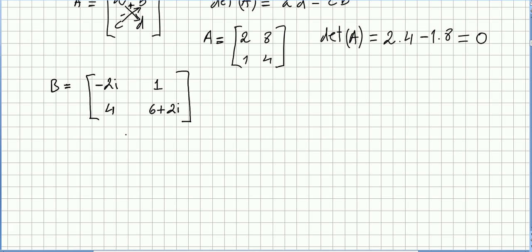What about a matrix 2 by 2 of order 2 but with complex entries? Well that's exactly the same. We just do the determinant of B. So that will be minus 2i times 6 plus 2i minus 4 times 1. So this will be minus 12i plus 4 and here we have minus 4. So 4 minus 4 is 0. So we have minus 12i and that is the determinant of B.